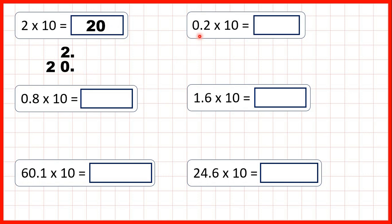Now let's use the same method to multiply 0.2 by 10. We can write out the decimal, 0.2, and copy down the decimal point. Now we're multiplying by 10, which means the digits are going to move 1 square to the left. So if we copy down this 0 one square to the left, and do the same with this 2, we now have 0, 2, and if the decimal point is on the end, we have a whole number, so our answer is 2.